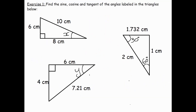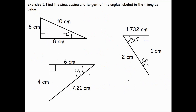Here are some questions for you to find the sine, cos, and tangent of each of the angles in the triangles — so for the first two, x and y, and then 30 and 60 degrees. Please pause the video now and have a go. When you're ready for the answers, press play.